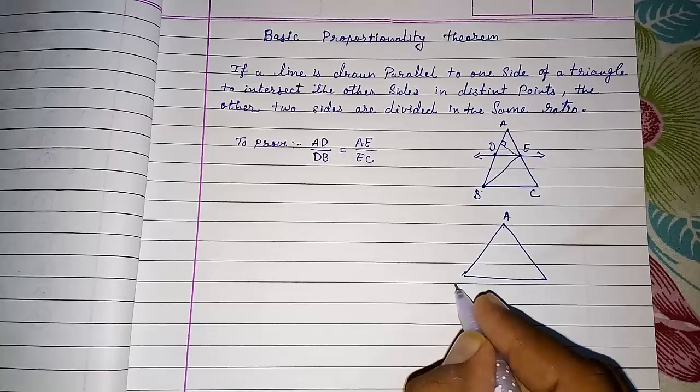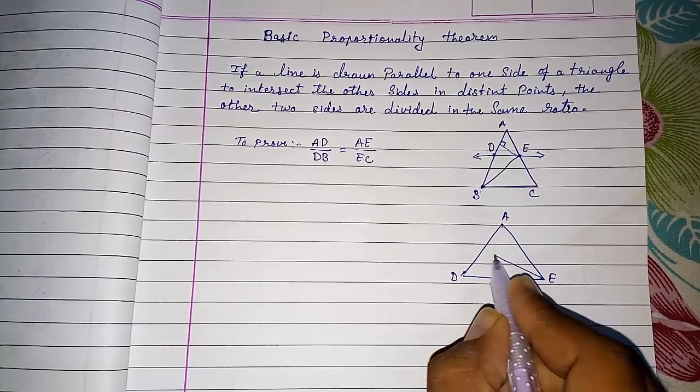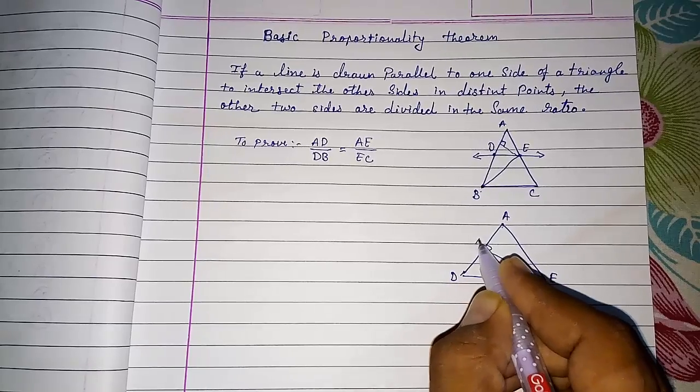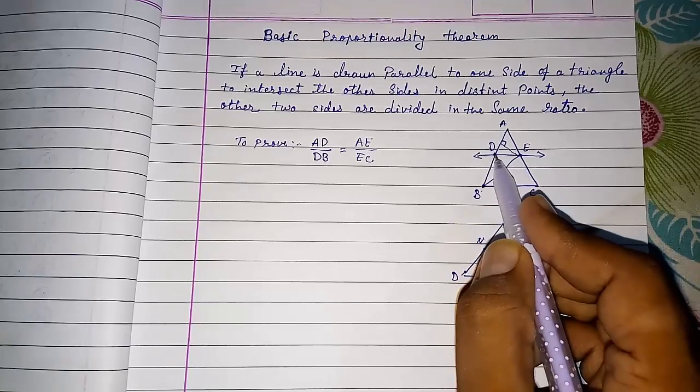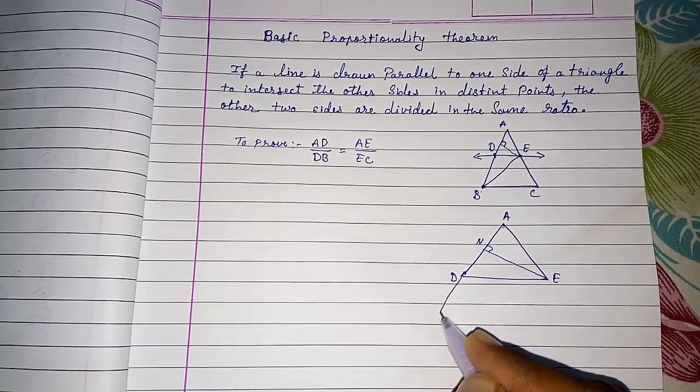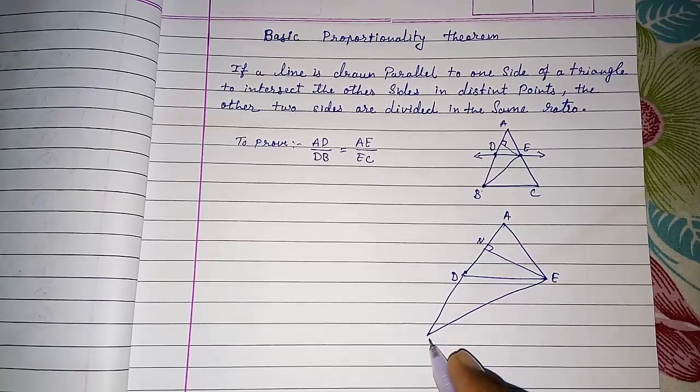Triangle A, D, E is there. So here DN will be the height. But this is also the height of triangle D, E, B if I am making here. D, E, B.